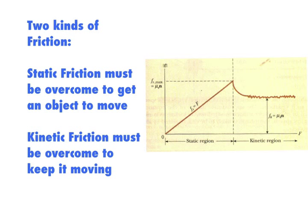There are actually two kinds of friction, both illustrated in this graph. If this graph measures the amount of force it takes to get an object moving and then keep it moving, notice: if I start pushing on a heavy crate and push harder and harder, I finally reach a force that gets it going, then just keep it moving. The force needed to make it start to move is greater than the force needed to keep it moving. I call this peak static friction, and the force to keep it moving I call kinetic friction.